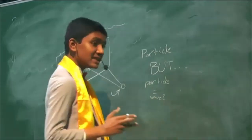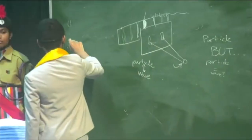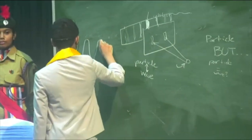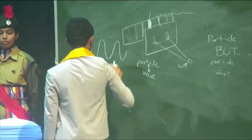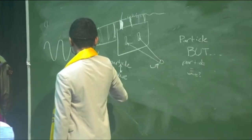So essentially, there was a physicist named Louis de Broglie, and what he showed was that every particle can essentially be described by a wave with very, very, very high wavelength.